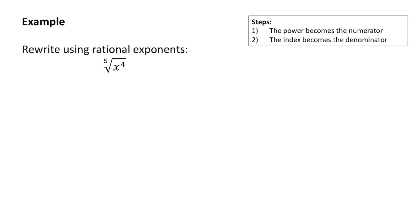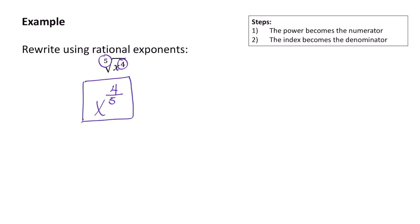So let's rewrite this using rational exponents. When we rewrite this, we get x, and then the 4, which is the power, will become the numerator. The 5, which is the index, will become the denominator. So this is the same thing as x to the 4 fifths.